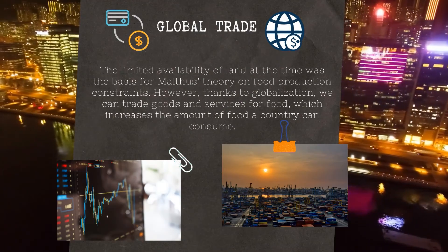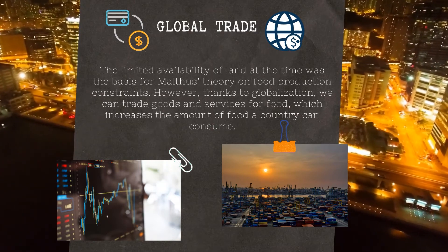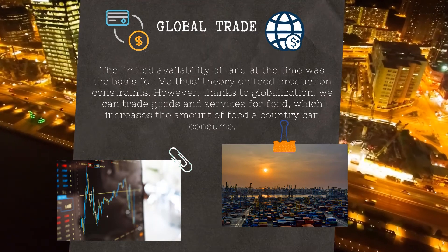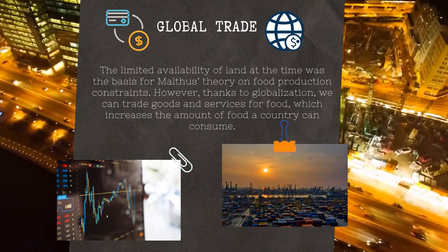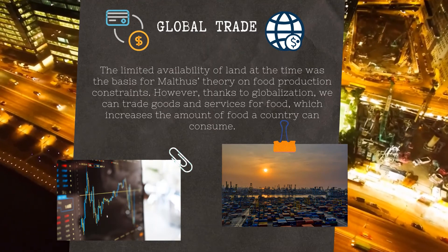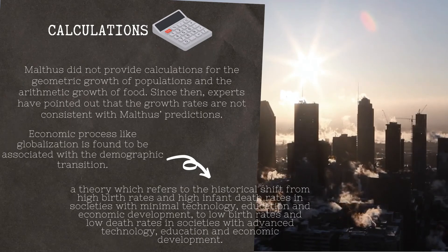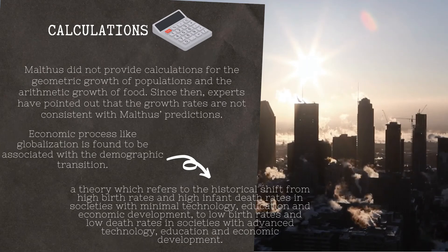Third, global trade — Malthus's hypothesis about food production restrictions was generally grounded on the lacking accessibility of land. Through globalization, people can trade goods and services for food, which may increase the volume of food a country can consume. Fourth, calculations — Malthus didn't provide calculations for the geometric growth of populations and the arithmetic growth of food. Specialists have noted that growth rates are not consistent with Malthus's forecast.